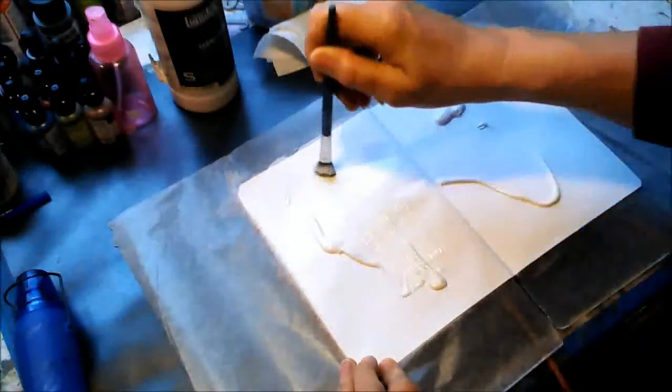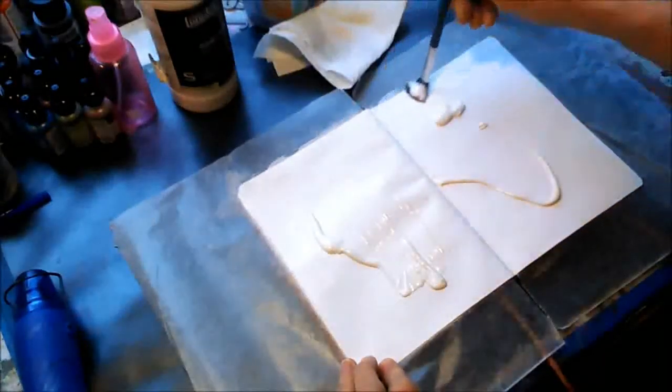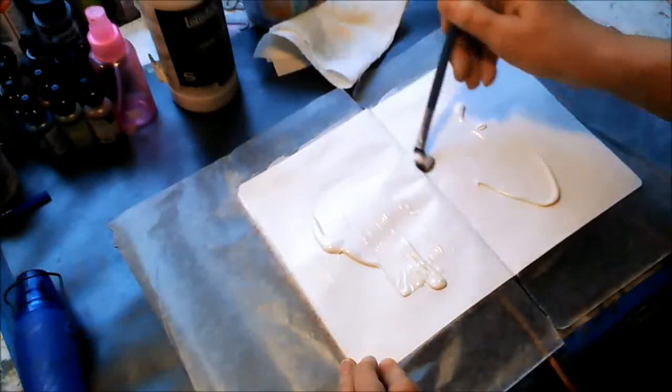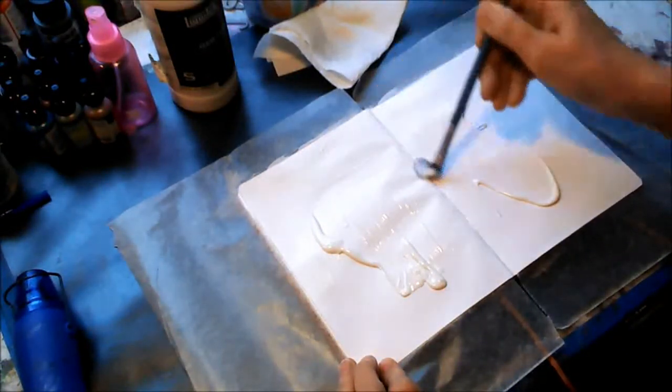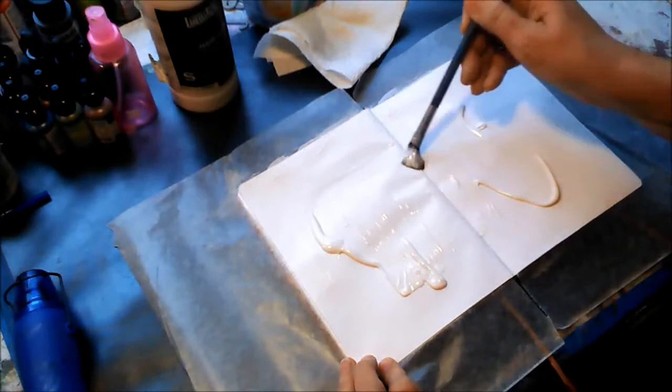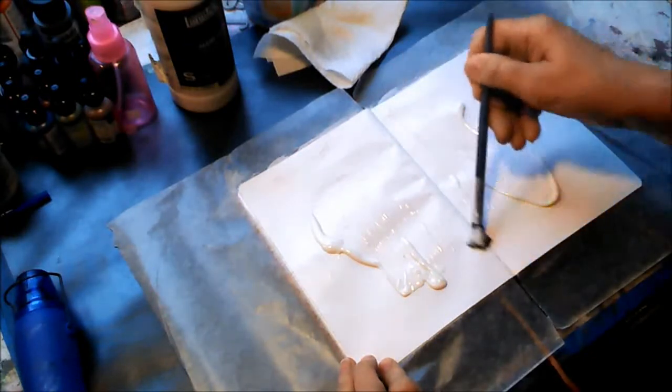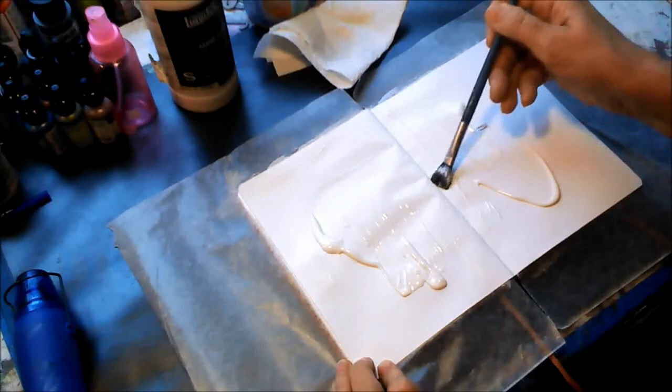I'm gessoing my pages. Of course, you know to get the gesso clear out to the border of the page. Get a nice even coat on the pages. You'll want to get inside the gutter margin of the book.